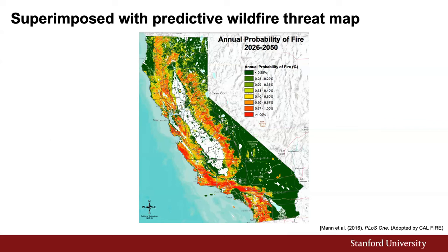We can then use this map and superimpose it with a map of predicted wildfire rates, using the annual probability of wildfires from 2026 to 2050 projected using environmental and climate projections under a high emissions scenario. After overlaying these two geospatial distributions, we can characterize how distribution grids in different areas are exposed to future wildfire threats.